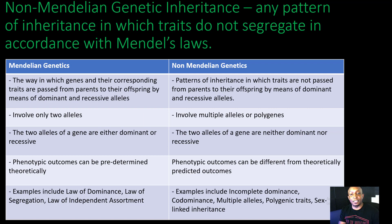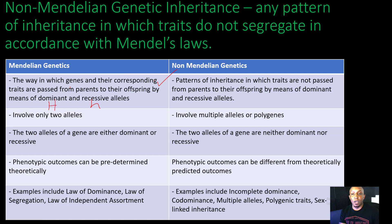If we take a look at Mendelian genetics versus non-Mendelian genetics: in Mendelian genetics, it's the way in which genes and their corresponding traits are passed from parents to the offspring by means of dominant and recessive alleles — where you get that uppercase letter and your lowercase letter — and we talk about homozygous dominant, heterozygous dominant, and homozygous recessive. But in non-Mendelian genetics, traits are not passed by means of dominant and recessive alleles, so there are other factors involved.